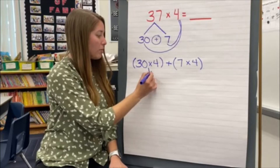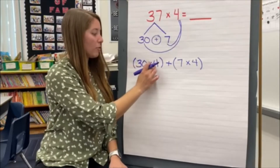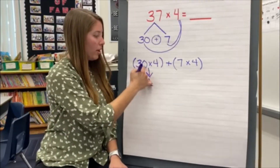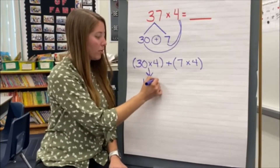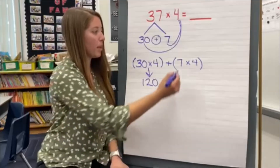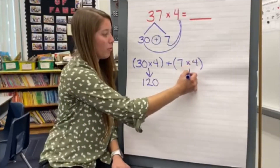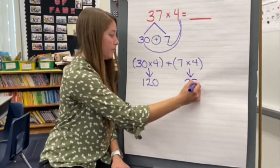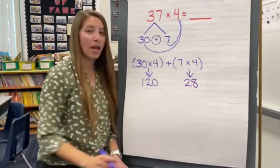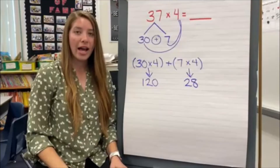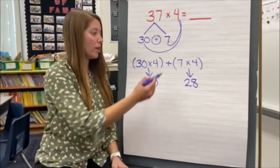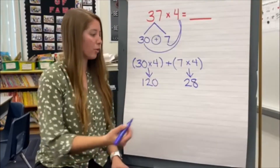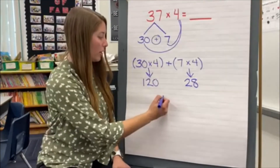Then I'm going to solve this equation starting with what's in the parentheses. So 30 times 4 — 3 times 4 is 12, and bring our zero down — that gives us 120. And 7 times 4 is 28.